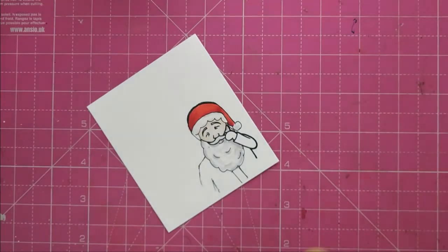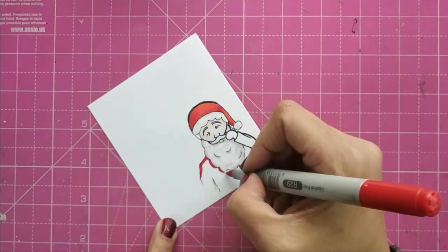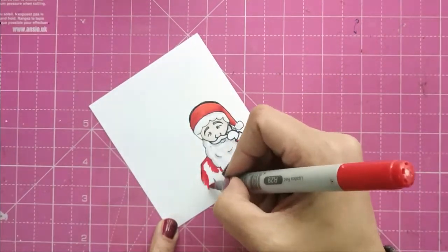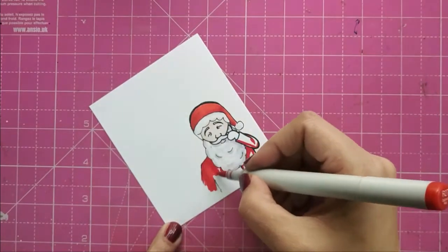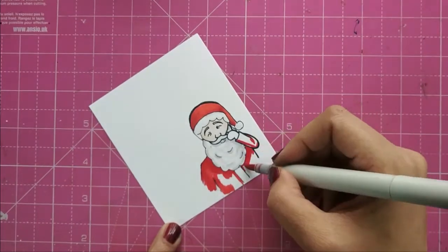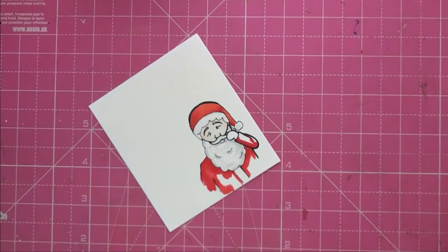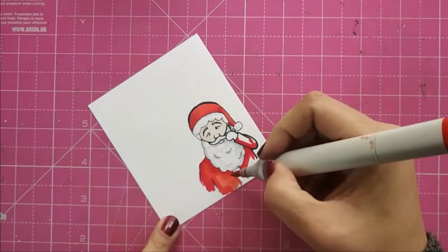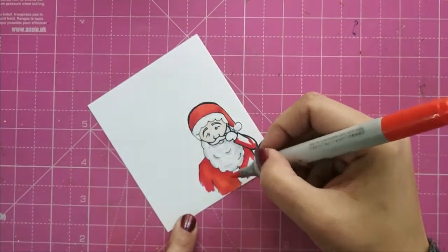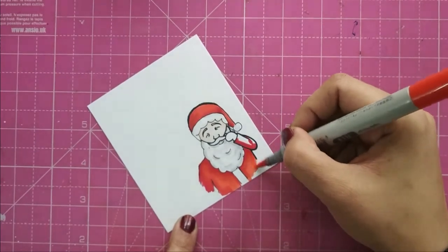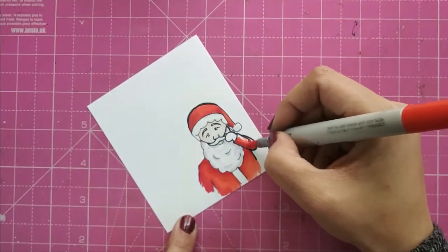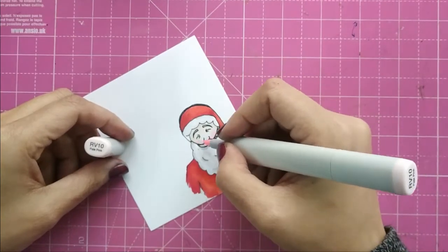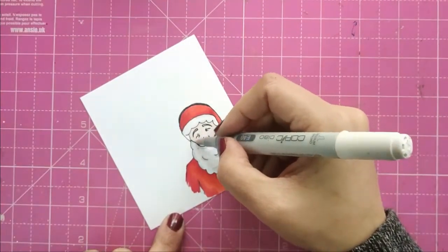And for the dress, I use R29, R27, and R14. I'm using V10 for my Santa Claus's cheeks and blend it out with E40.